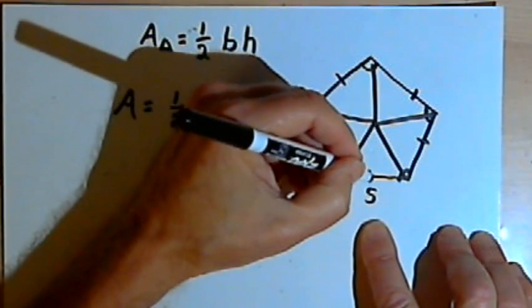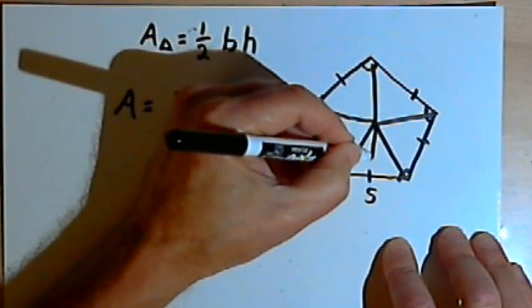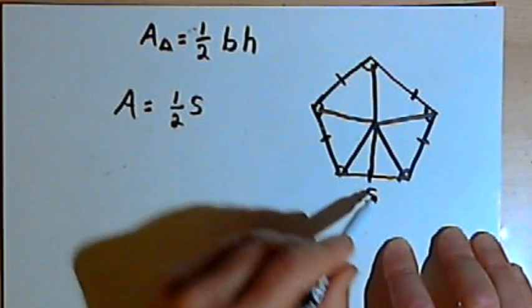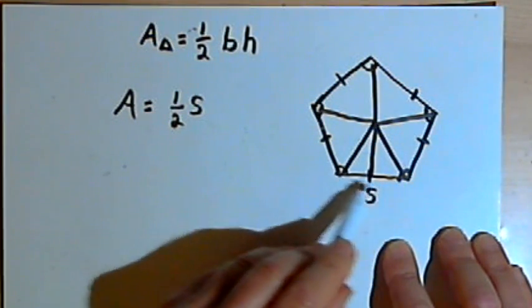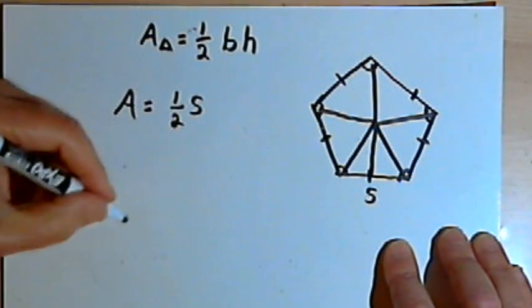What we do is we talk about the distance from the center directly to the side. Now that distance is going to actually be a perpendicular line drawn to the side. And that distance is called an apothem.